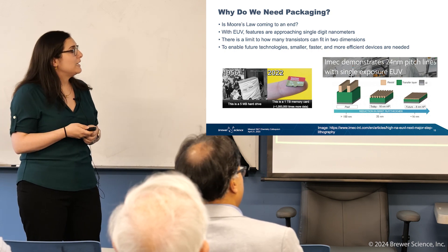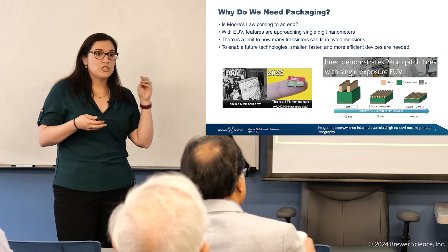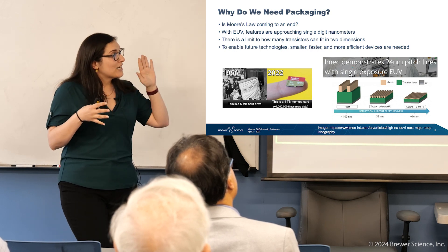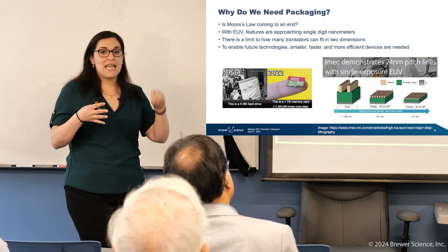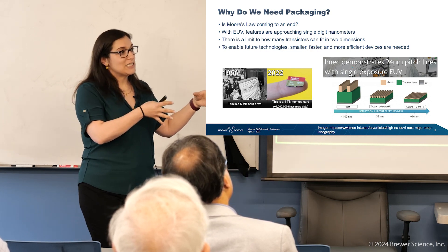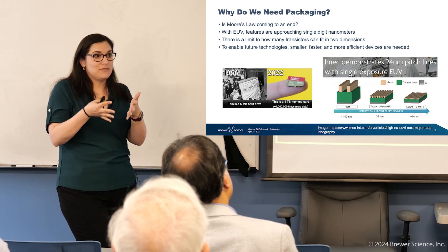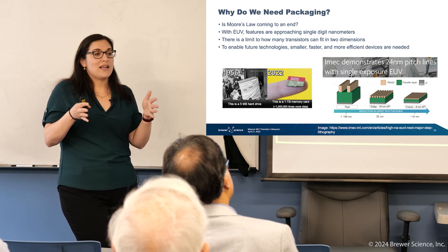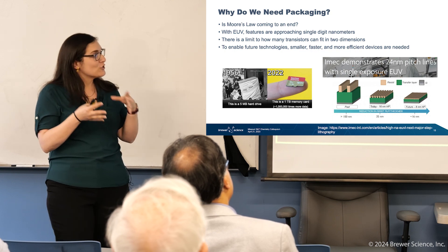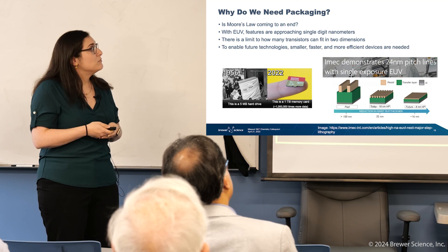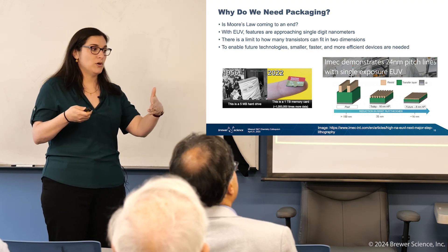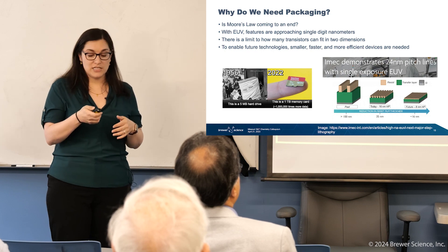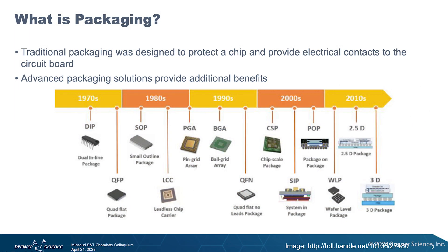But is Moore's Law coming to an end? If we think about extreme ultraviolet lithography, which Joyce introduced last week, this is the most advanced technology we have for lithography right now. We're currently demonstrating single-digit nanometer lines and spaces. Once we go past single-digit nanometers, we're really into angstrom-size devices, and at some point we're at atomic-size transistors. You're going to run out of space in the XY direction — there's only so much you can fit. So how do we continue to enable smaller, faster, and more efficient devices if we cannot shrink transistors any smaller? The answer is semiconductor packaging.